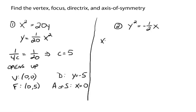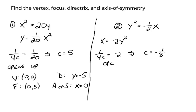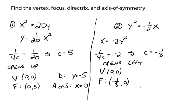For x equals negative 2 times y squared: since it's x equals y squared form, the parabola opens right or left. Setting 1 over 4c equal to negative 2 gives c equals negative 1/8. Since c is negative, it opens left. The vertex is the origin, the focus is at (negative 1/8, 0) — inside the parabola. The directrix is the vertical line x equals 1/8. The axis of symmetry is y equals 0, which is the x-axis.